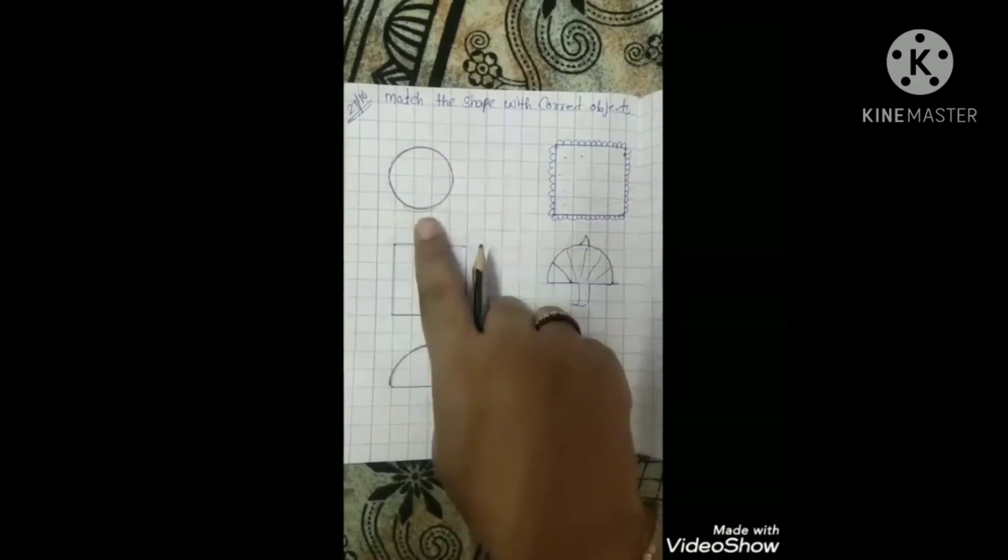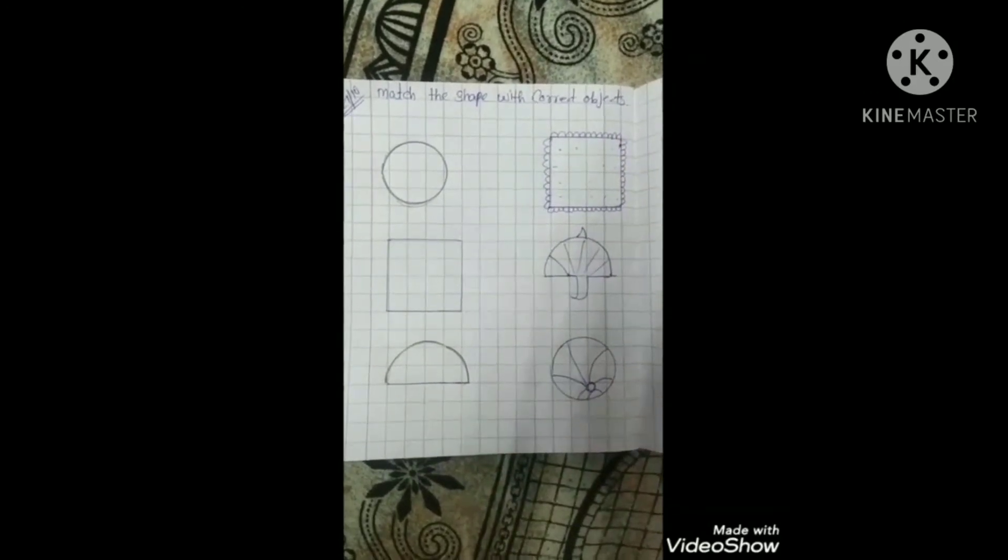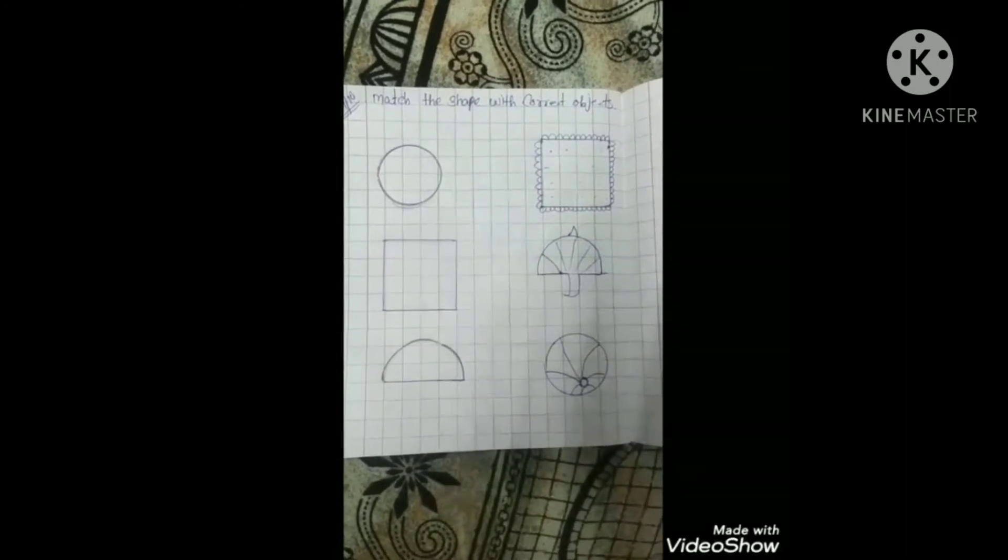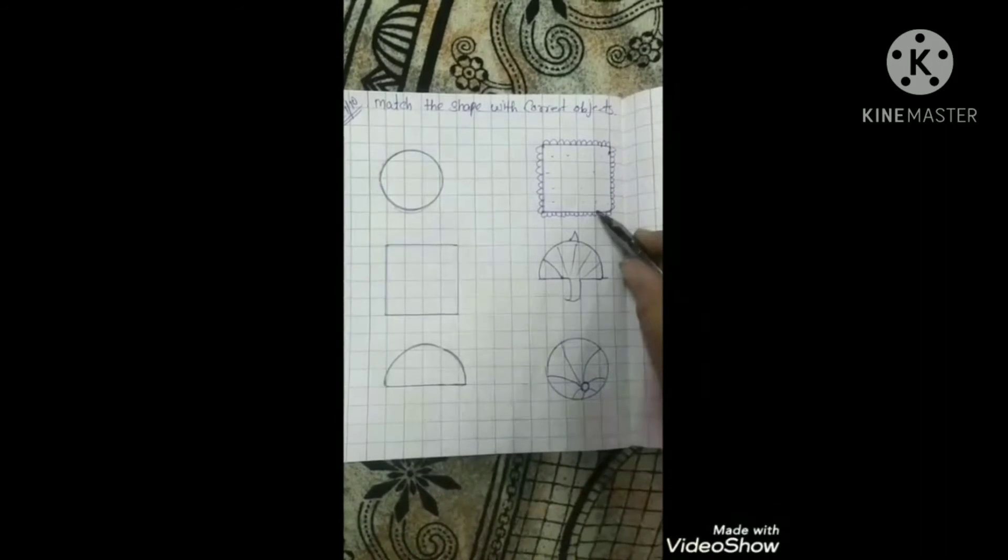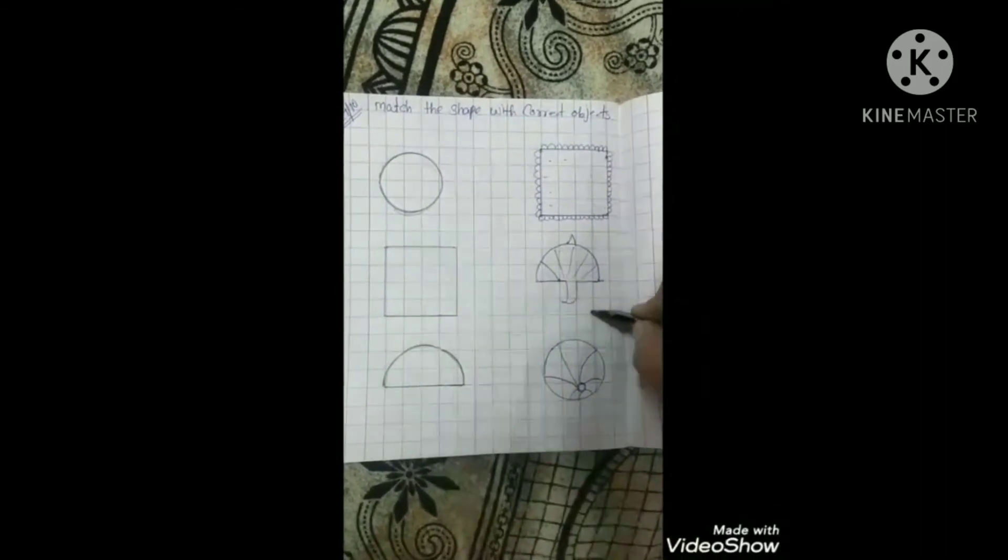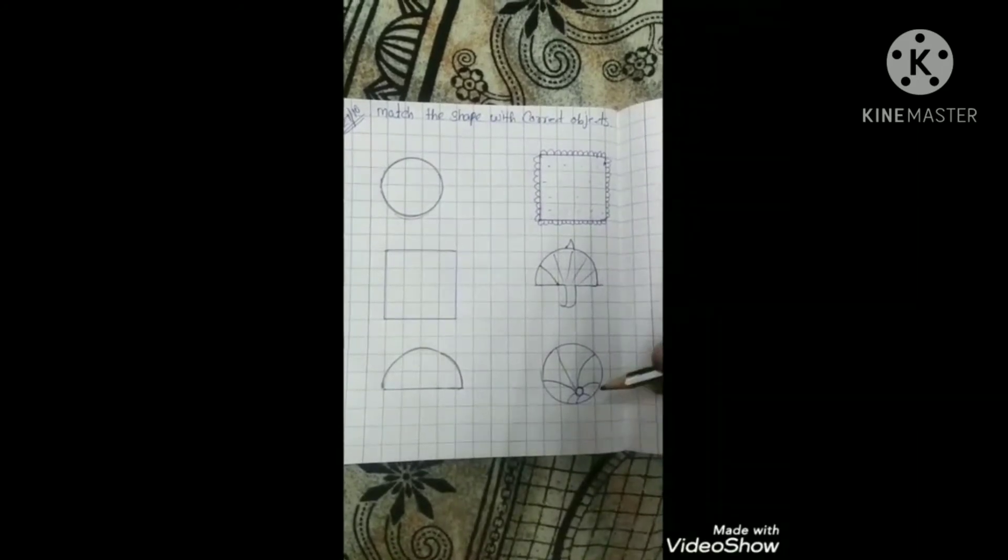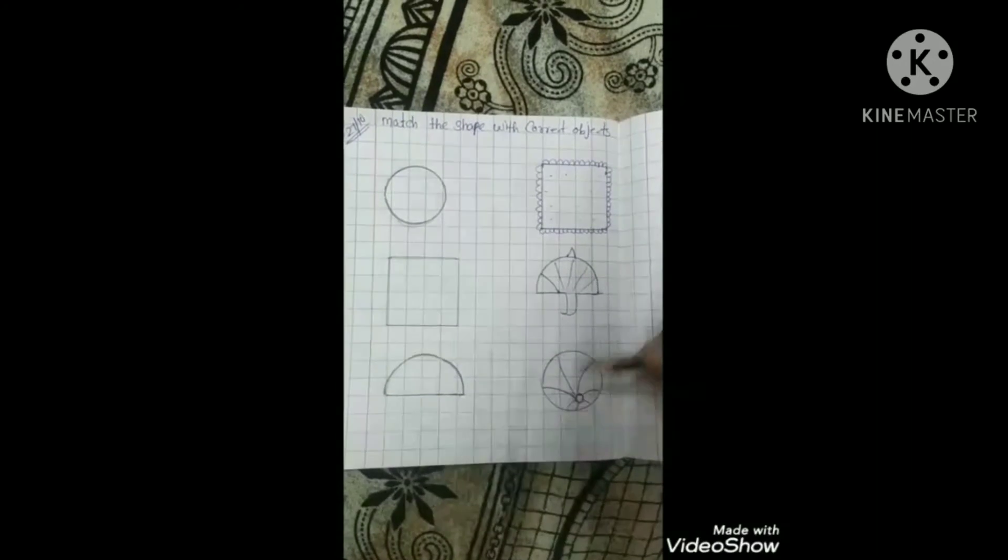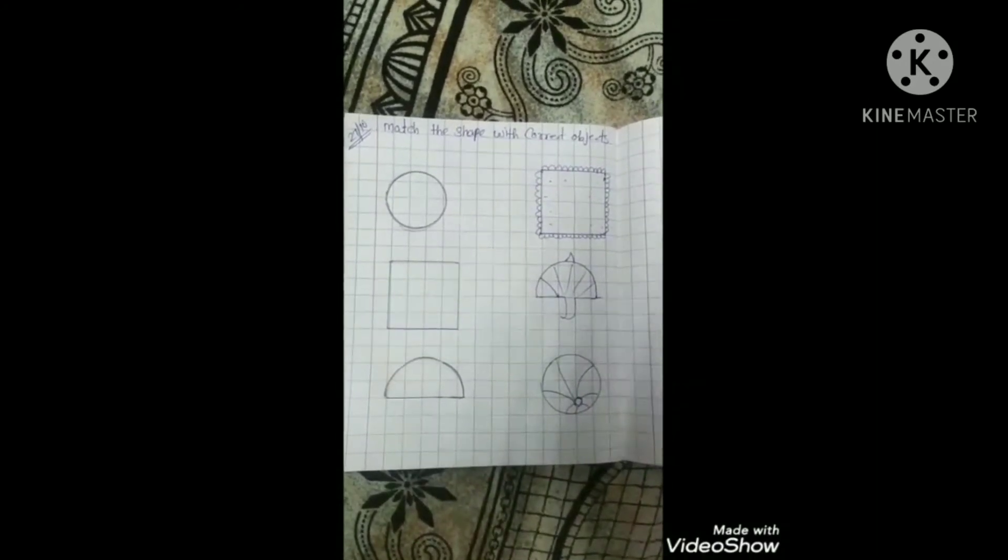Okay, now see here kids. First one, circle. And this side, which object has a circle shape? See, this one is hanky, this one is umbrella, and this one is ball. And kids, ball has a circle shape. Right? So you have to match with the ball. Circle shape ko ball ke saath match karna hai. Right?